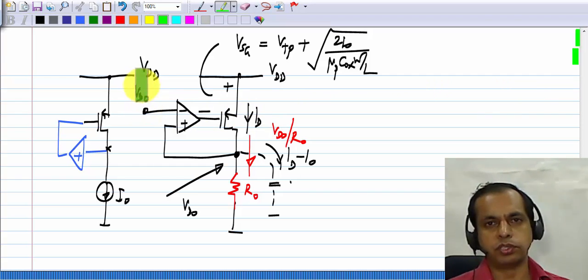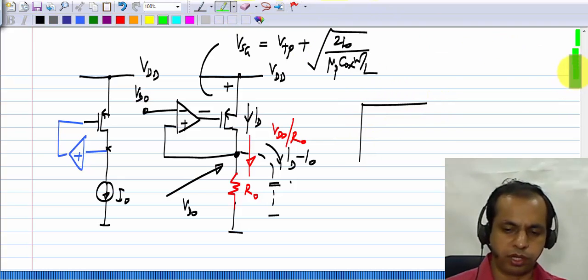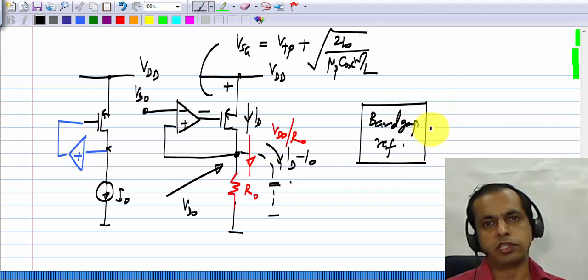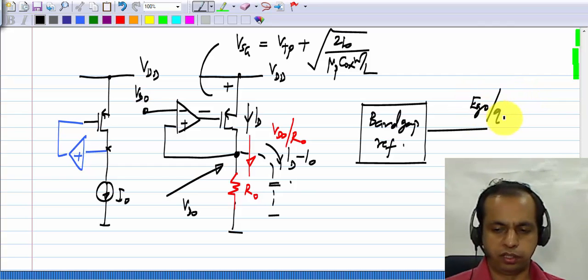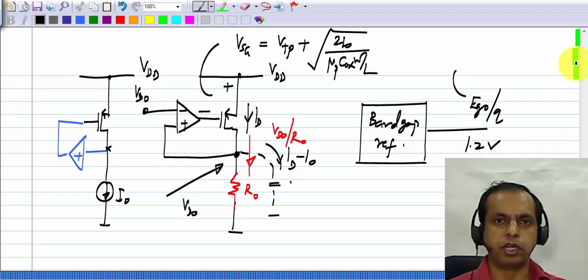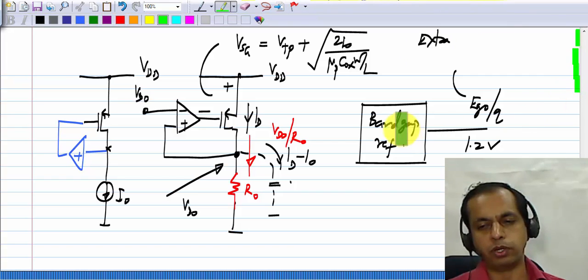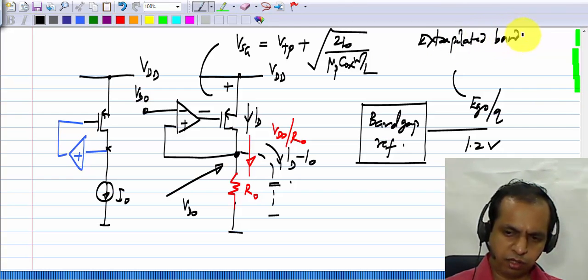And it turns out that a precision voltage source is also available in IC technologies, there is a circuit, I will not go into, it is known as a band gap reference, and its output voltage turns out to be the extrapolated band gap of silicon at 0 Kelvin divided by Q, that is approximately 1.2 volts. You know that the band gap of silicon is around 1.1 volts or so, but that is at room temperature. The extrapolated band gap at 0 Kelvin is 1.206 electron volts, and the output voltage of this will be equal to that voltage, and that will be very precise, it is independent of temperature and so on.